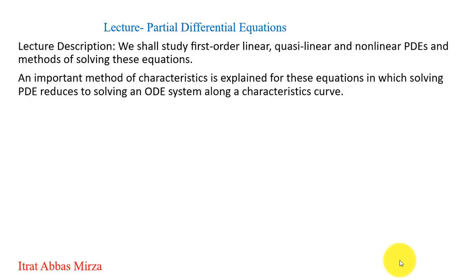This method reduces the partial differential equation to solving an ordinary differential equation system of characteristic curves — which in the linear case are three. So we will have a PDE which is linear first order, and when we apply the method of characteristics, we need to solve an ordinary differential equation system of three linear equations. This is what we had done previously in the lectures before the vacations — we had completed two methods, method one and method two, for solving characteristic equations of differential equations.